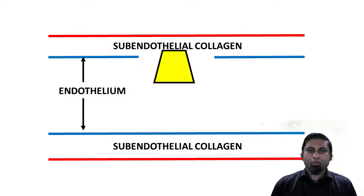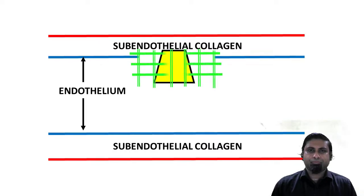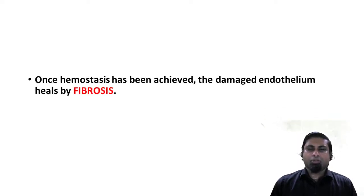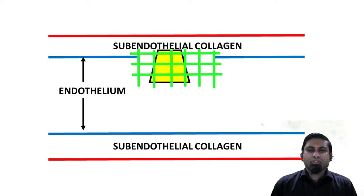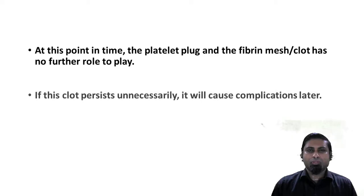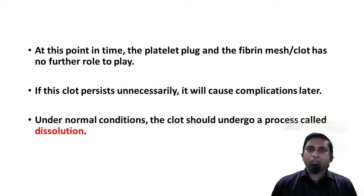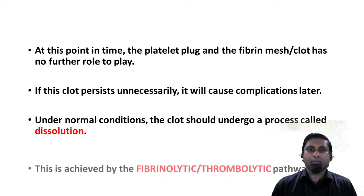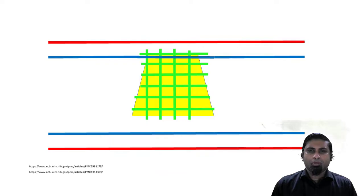A platelet plug is formed and it is supported by a fibrin mesh. In time, the damaged endothelium will heal by fibrosis, and once this occurs, the hemostatic plug is no longer necessary. If it persists it could lead to complications, and therefore under normal conditions the clot should undergo a process called dissolution, which is carried out by the fibrinolytic or thrombolytic pathway.